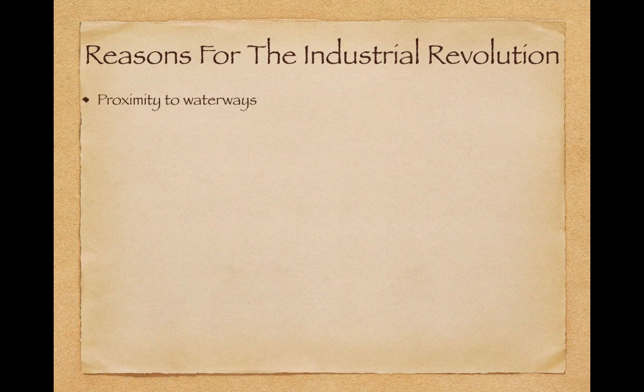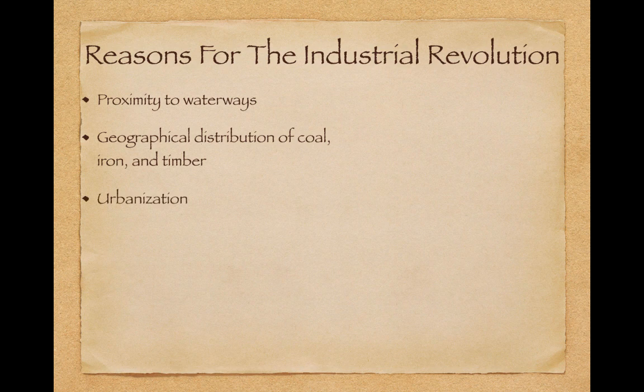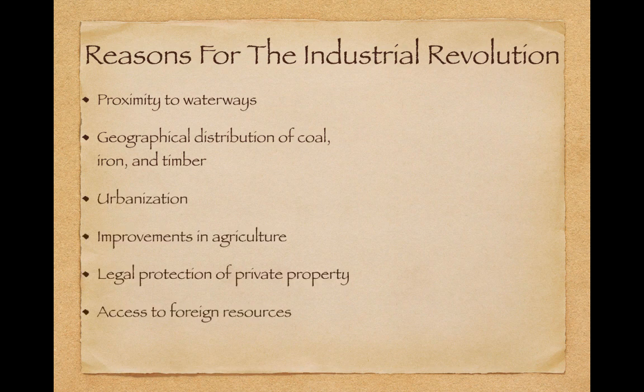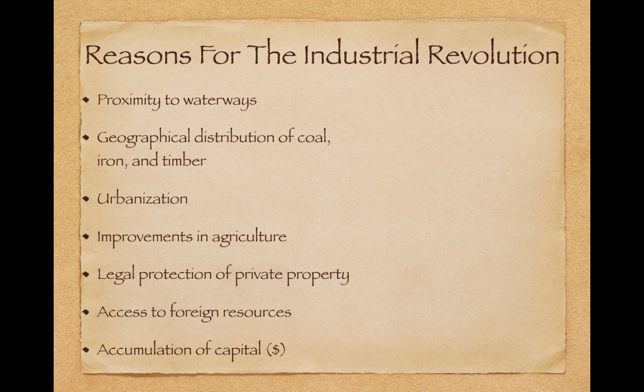Reasons for the Industrial Revolution include proximity to waterways, geographical distribution of coal, iron, and timber, urbanization, improvements in agriculture, legal protection of private property, access to foreign resources, and accumulation of capital, which is money. All seven of those are specifically listed in the AP World curriculum, so make sure you can identify and describe them if need be.